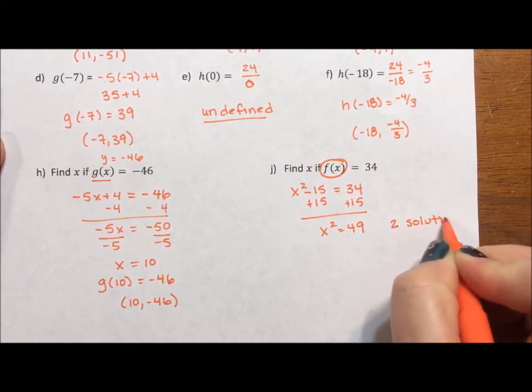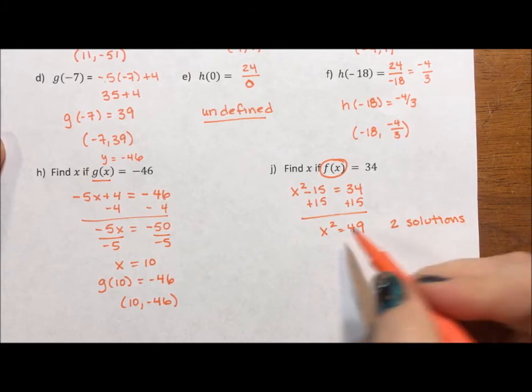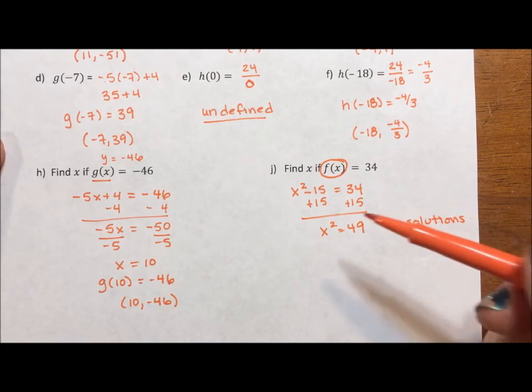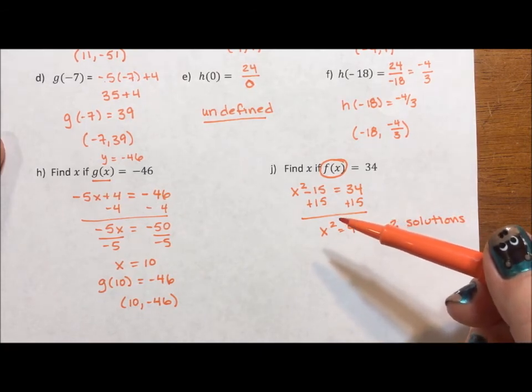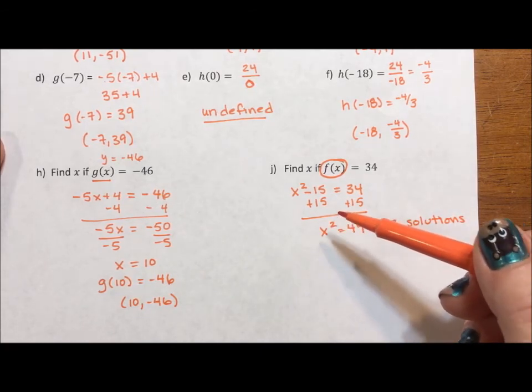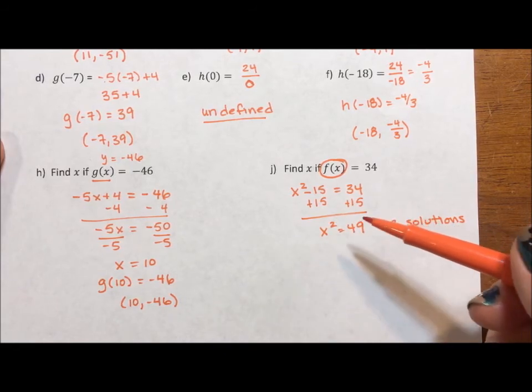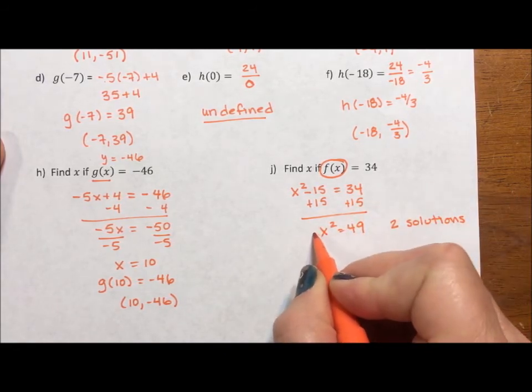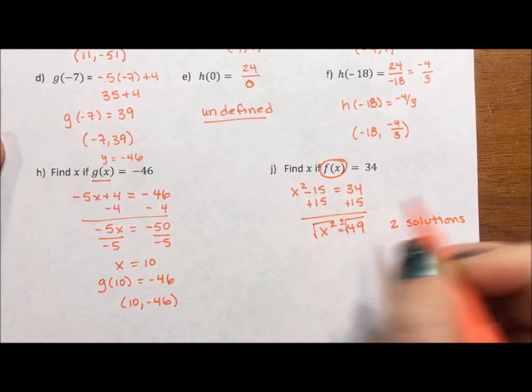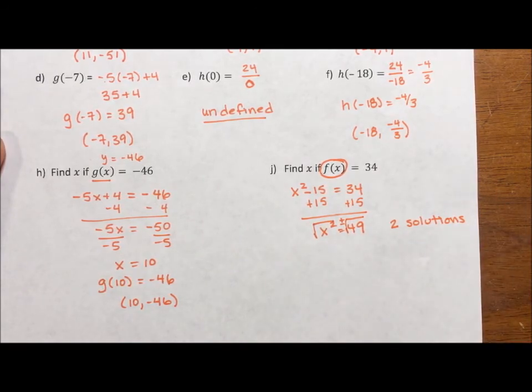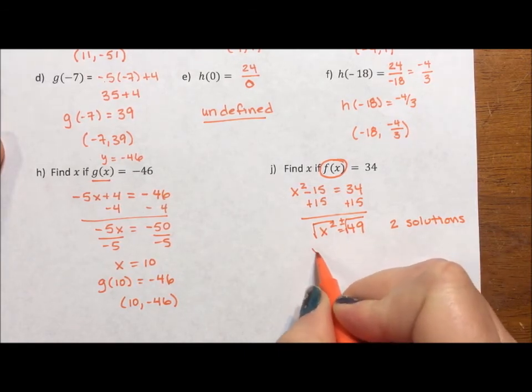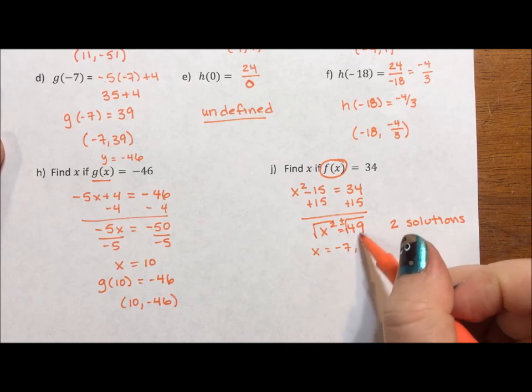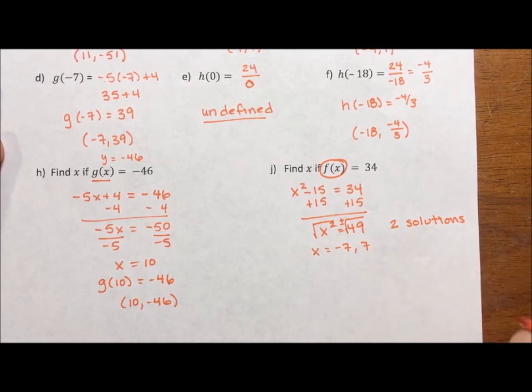Now x² implies two solutions. Whenever you see an exponent, that implies the number of times this graph could cross the x-axis. You're trying to figure out what values of x make y zero. In this case, it's going to be twice. Because when we find the square root, we have to acknowledge that this x could have come from a -7 or a positive 7. In both cases, when you square it, you get a positive 49.